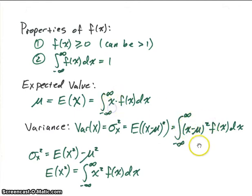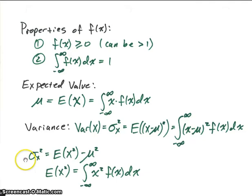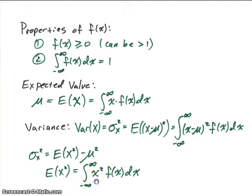The variance, sigma x squared, is the expected value of x minus the mean squared. We integrate from minus infinity to infinity of (x minus mu) squared times our density function. Just like with discrete random variables, the variance can also be written as the expected value of x squared minus mu squared. So we calculate the expected value of x squared — the integral from minus infinity to infinity of x squared times our density function — then subtract the mean squared to get the variance.